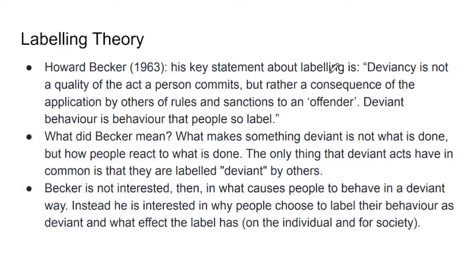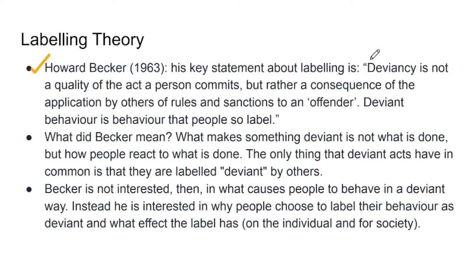Now we will see what Labeling Theory is and what its basic idea is. There is one main line here that you need to remember. The main thing Howard Becker said about labeling was: 'Deviancy is not a quality of the act a person commits, but rather a consequence of the application by others of rules and sanctions to an offender.' Deviant behavior is behavior that people so label. So what he is saying here is that deviancy — deviant meaning a person who is going against society — someone who is going against society's norms and values and doing something.